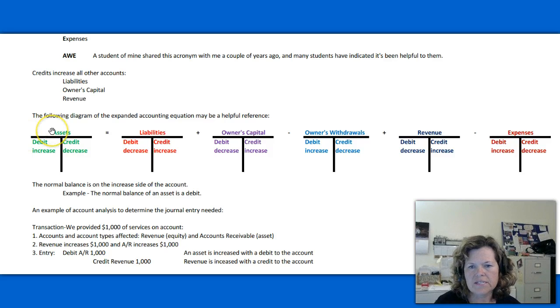So as you can see, I've listed the expanded accounting equation up here on the first line. We've got assets equals liabilities plus owner's capital minus owner withdrawals plus revenue minus expenses. So that should be familiar to you as far as the accounting equation goes. So what I've done with each of these account types is to create a T-account and to show which side increases assets in this case. So assets are increased by debits and they're decreased by credits.